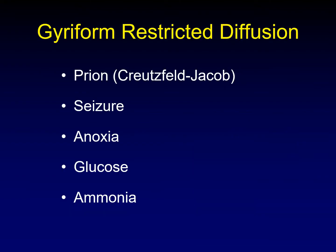Here's the differential: prion disease, particularly Creutzfeldt-Jakob disease; seizures, particularly in a post-ictal state; anoxic injury; abnormalities of glucose; and abnormalities of ammonia levels. This is not a complete list, but it highlights the most common causes of what is already an unusual imaging appearance.